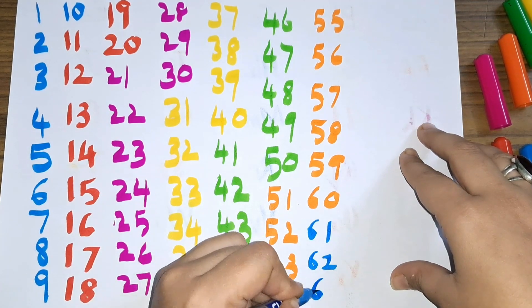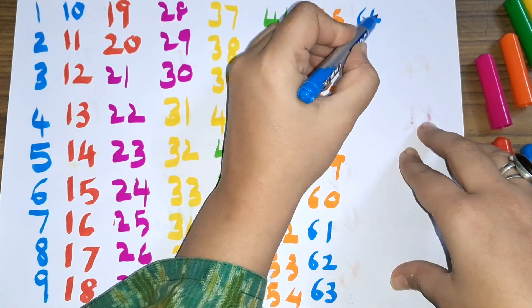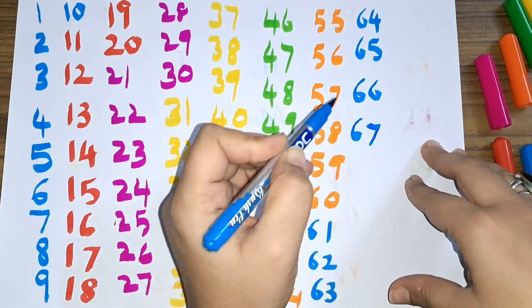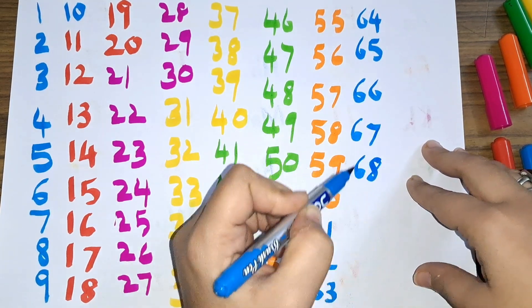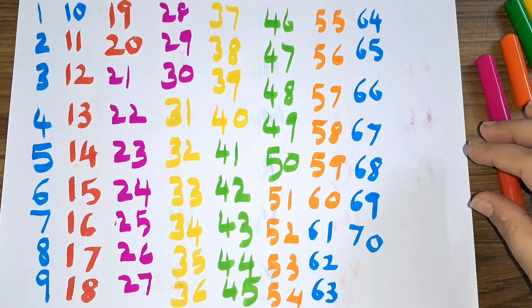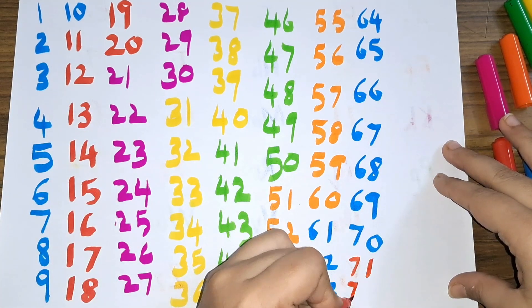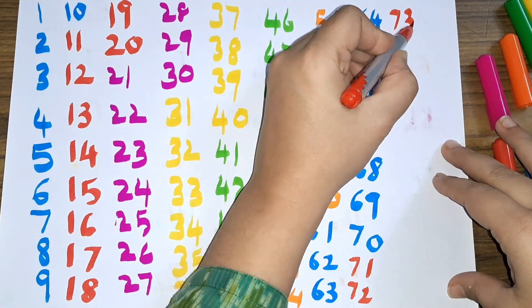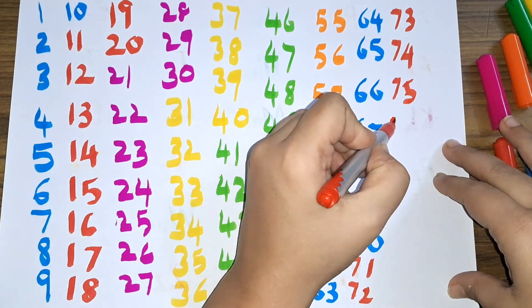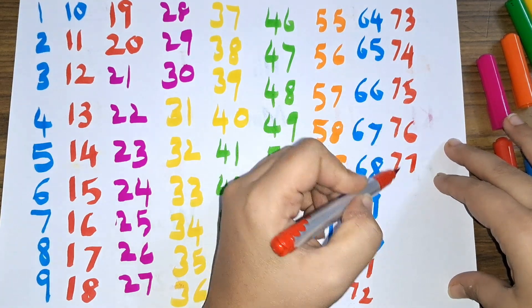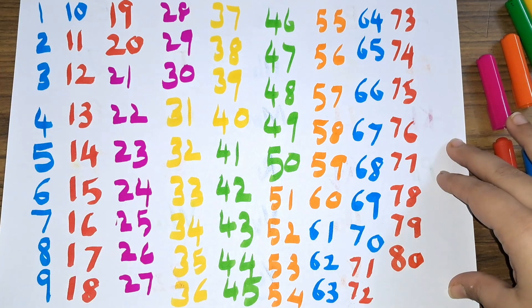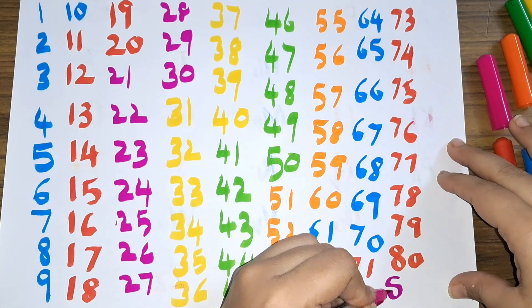62, 63, 64, 65, 66, 67, 68, 69, 70, 71, 72, 73, 74, 75, 76, 77, 78, 79, 80, 81.